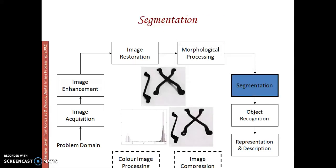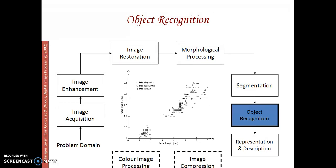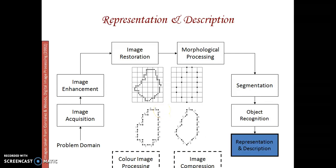Segmentation partitions an image into meaningful regions. We partition the image into sub-images and enhance the regions that are needed. Then object recognition — we recognize objects such as triangles or rectangles using boundary descriptors. Afterwards, representation and description: we represent and connect the boundaries and edges of a particular image.